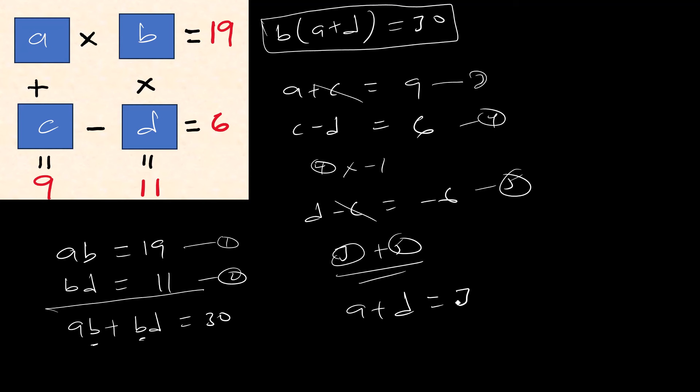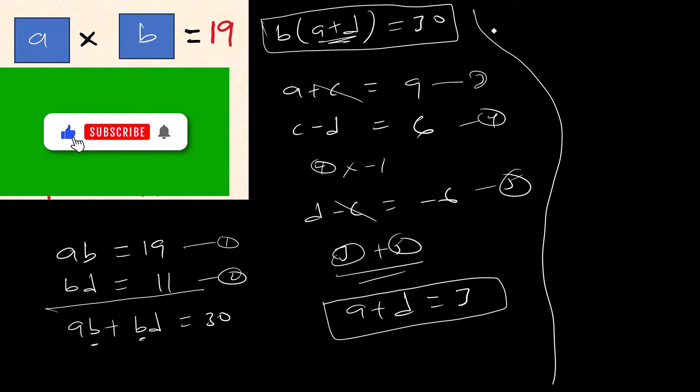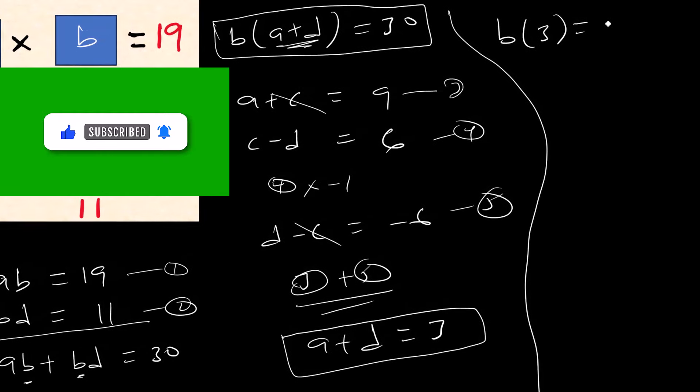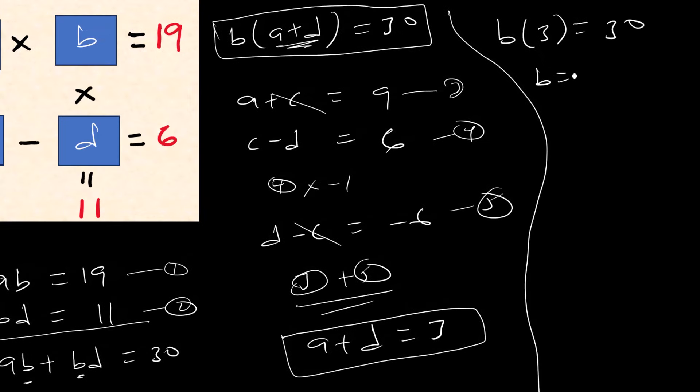You cancel this, 9 plus minus 6 is 3. Okay, so we know a plus d. And a plus d is here, so a plus d, we can substitute. So from here, b times (a plus d) is 3. Because a plus d is 3, therefore b is 30 over 3, which is 10.